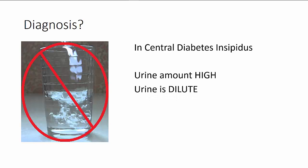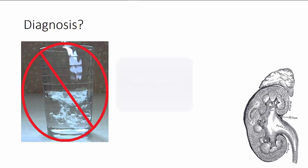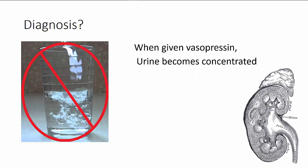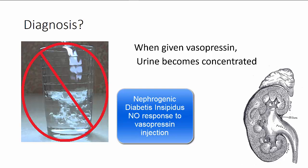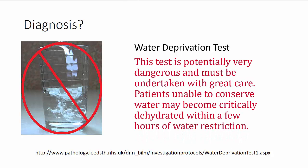Sometimes the ADH level is normal but the kidneys don't respond to it — this is called nephrogenic diabetes insipidus. To test this, at the end of the study you give your patient a dose of desmopressin, which is a drug that acts like vasopressin. If the problem is insufficient vasopressin, then the urine should become concentrated. If the problem is that the kidney can't respond to vasopressin, then giving your patient vasopressin should have no effect and the patient will continue to excrete large amounts of dilute urine. This test is not without its dangers — see the links for details.